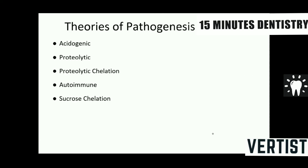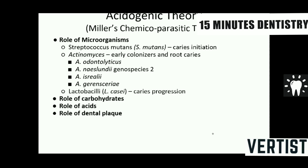There are a number of theories of pathogenesis of dental caries — acidogenic and proteolytic. The most common one is the acidogenic theory, put forward by W.D. Miller, commonly called Miller's chemico-parasitic theory. The other one, given by Gottlieb, is the proteolytic theory. You should know about both of these theories in detail.